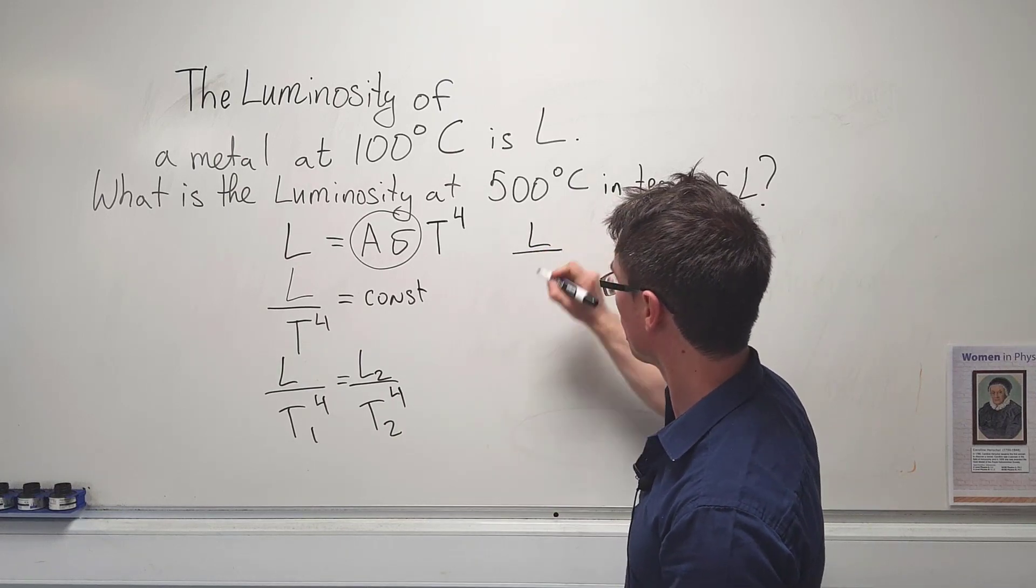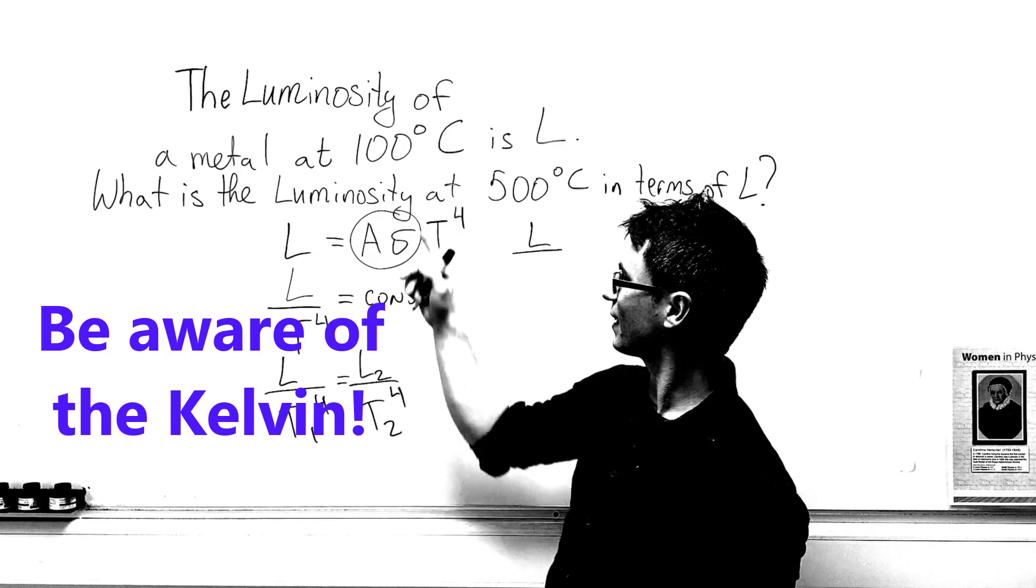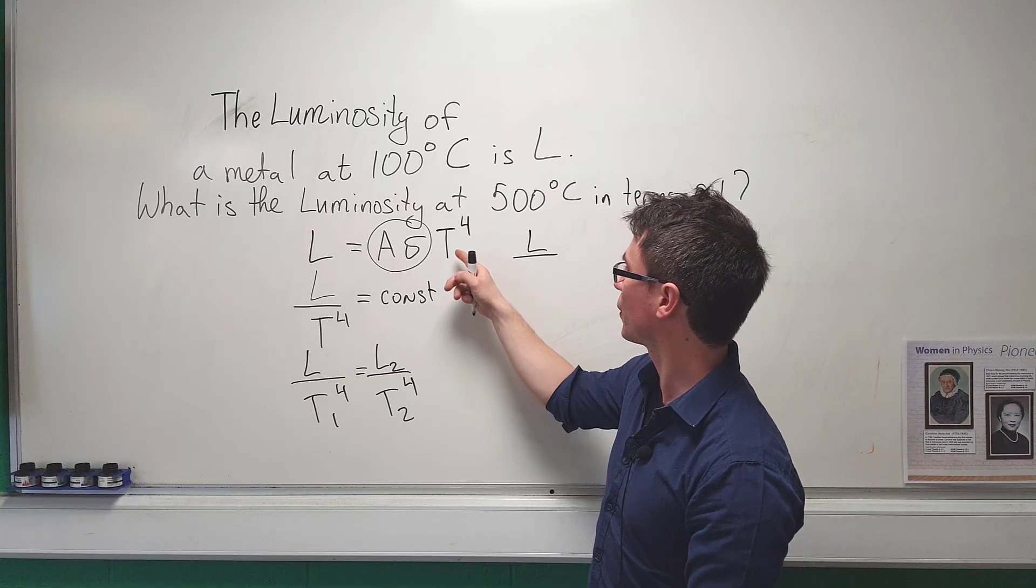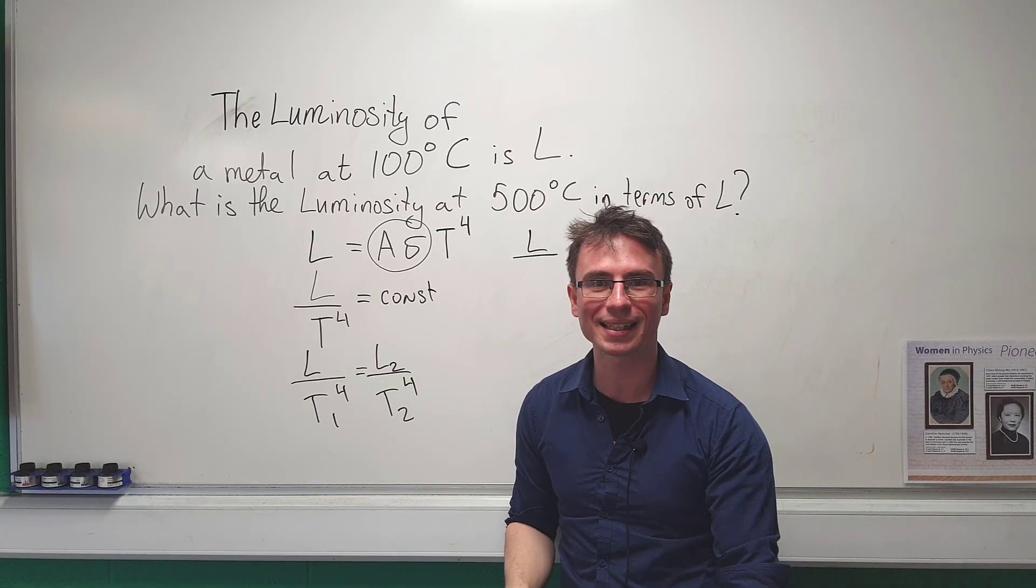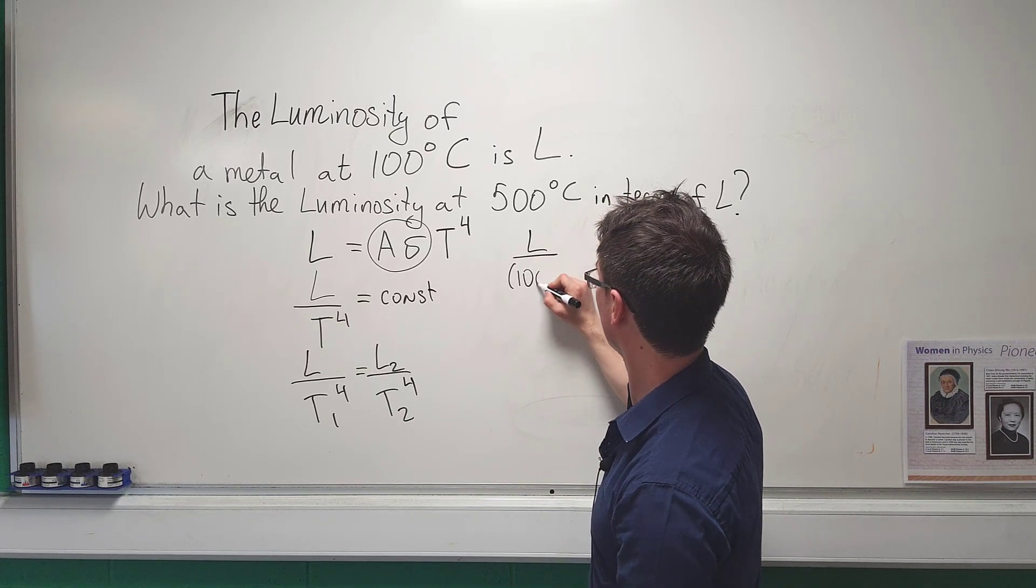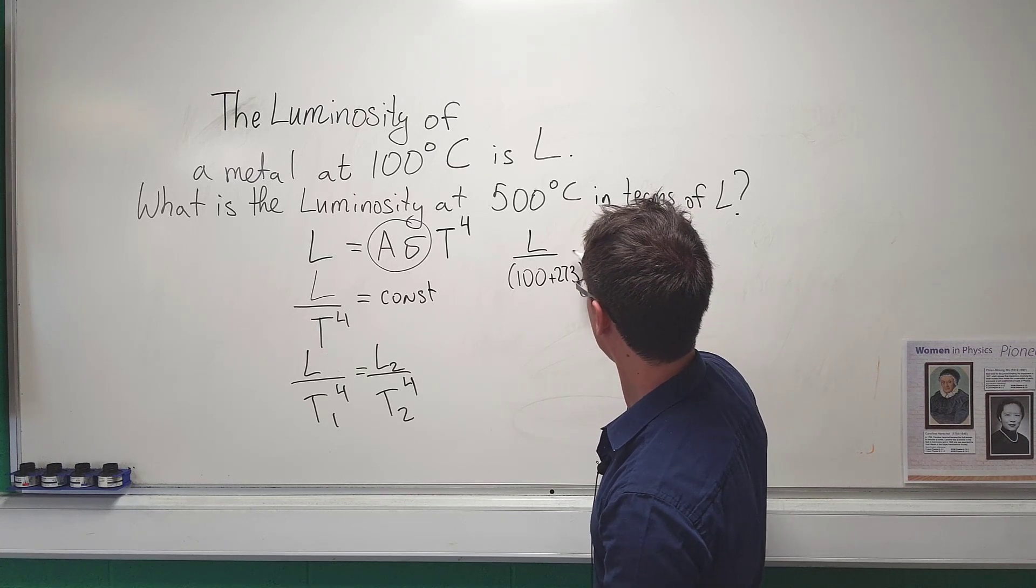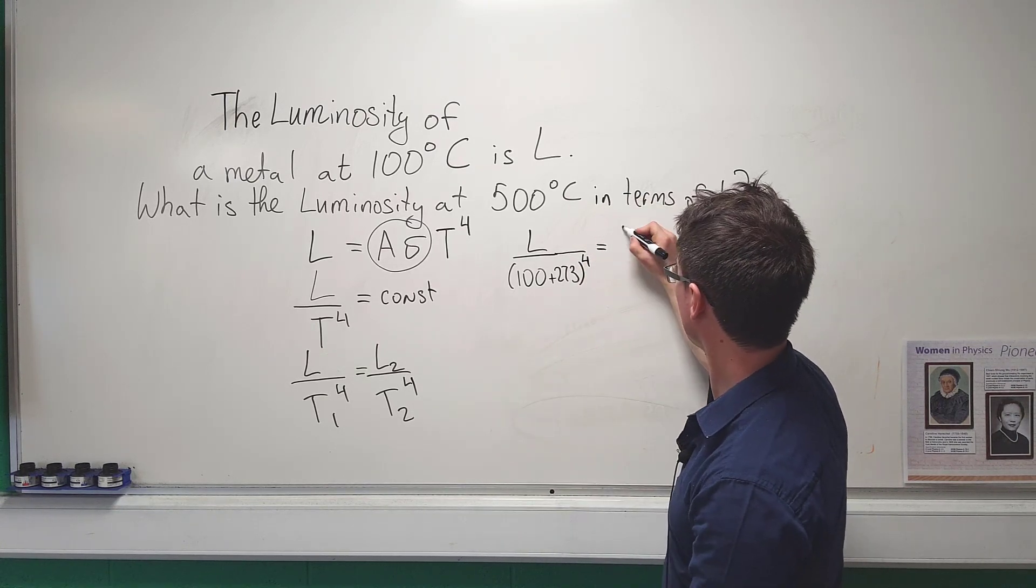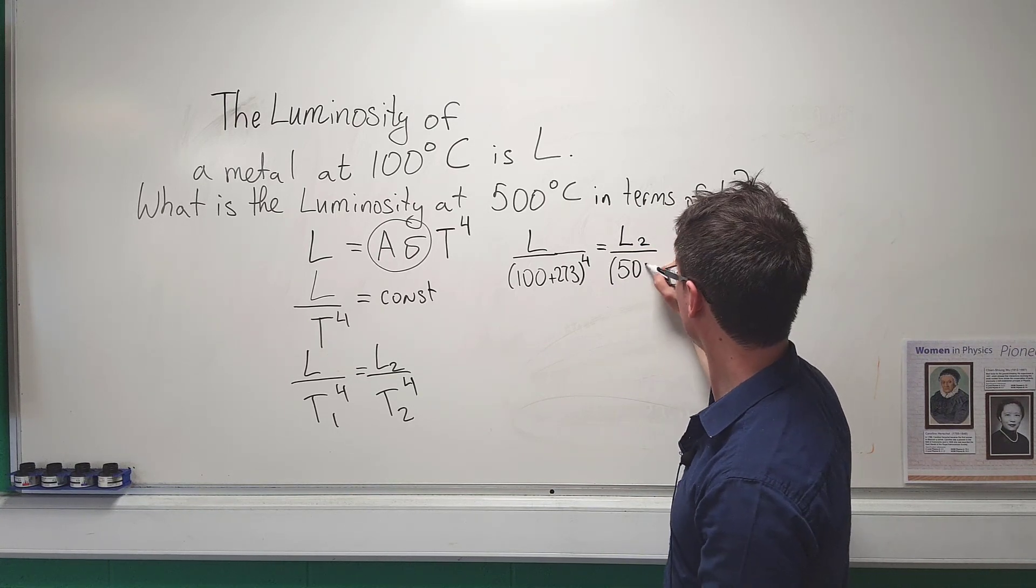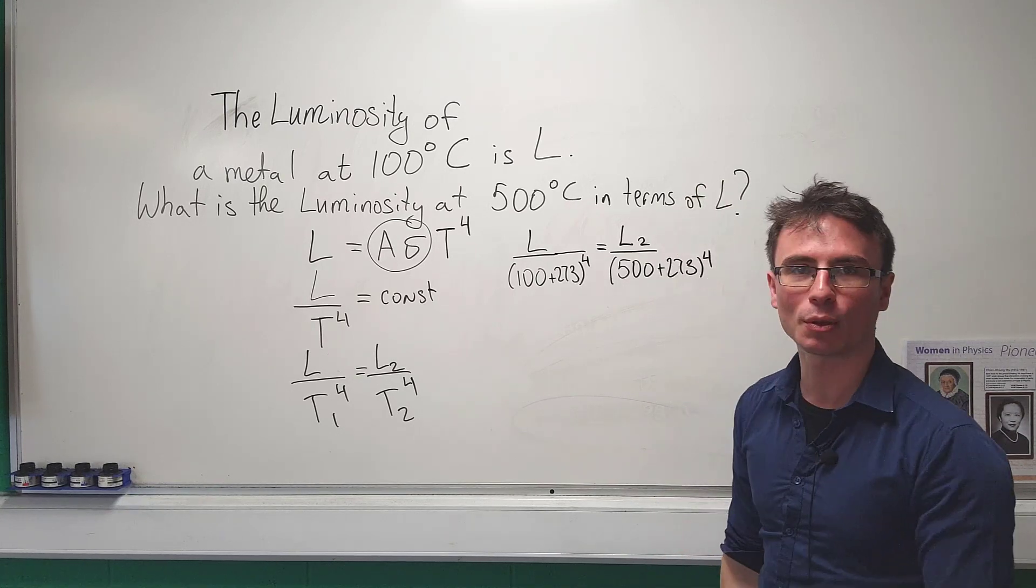So we can say that L over the original temperature. Now just be careful because 100 degrees C will need to be converted to Kelvin. As you can see this is given with capital T which typically signifies that we're working in Kelvin. So this will be 100 plus 273 raised to the power of 4 will be equal to the final luminosity over 500 plus 273 raised to the power of 4.